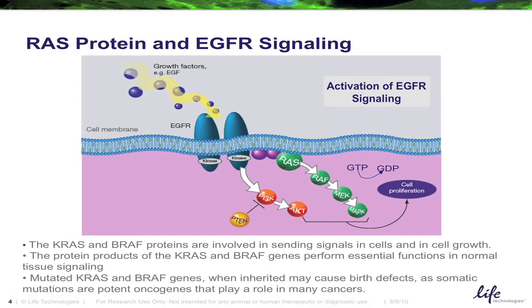Let's take a look at how KRAS and BRAF work with the EGFR signaling pathway. KRAS and BRAF are proteins involved in sending signals in cells and in cell growth. The protein products of the KRAS and BRAF genes perform essential functions in normal tissue signaling. Epidermal growth factors bind to receptors and in normal Ras protein function, this triggers a cascading phosphate conversion that then leads to cell proliferation.